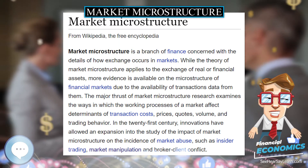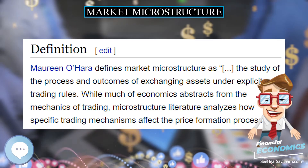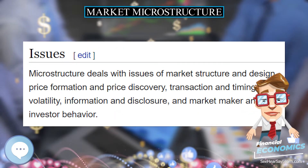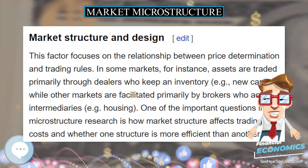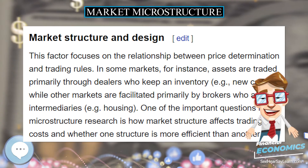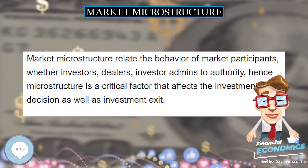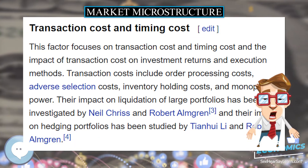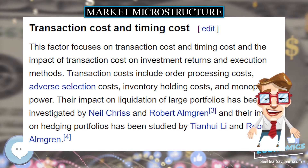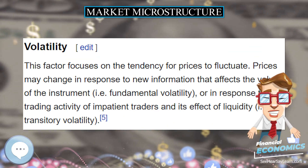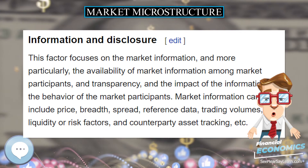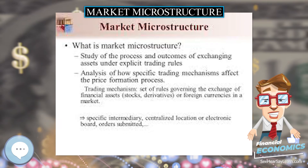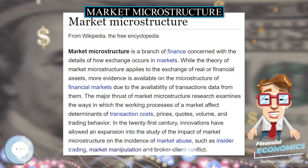Issues microstructure deals with include market structure and design, price formation and price discovery, transaction and timing cost, volatility, information and disclosure, and market maker and investor behavior. The market structure and design factor focuses on the relationship between price determination and trading rules. In some markets, assets are traded primarily through dealers who keep an inventory, for example new cars, while other markets are facilitated primarily by brokers who act as intermediaries, for example housing. An important question in microstructure research is how market structure affects trading costs and whether one structure is more efficient than another.